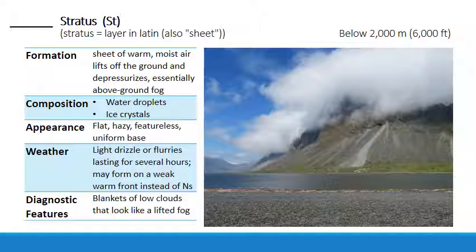You can most easily identify stratus clouds by their blanket-like appearance, relatively uniform base — which might be a little ragged — and the fact that they look like a lifted fog. They're commonly associated with weak warm fronts. They may produce a light drizzle or light snow, but I wouldn't expect very heavy precipitation.